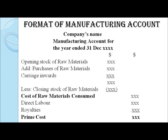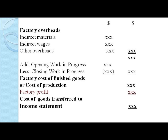Now, after understanding all the elements of manufacturing accounts, let's see the format. The format of manufacturing accounts starts with the cost of material consumed, followed by the total prime cost. Next, we calculate the factory overheads along with the entries for work in progress. Thus, we obtain the total cost of production. To this, we add the factory profit and transfer the value to the income statement at a transferring price. This concludes the format of manufacturing account.